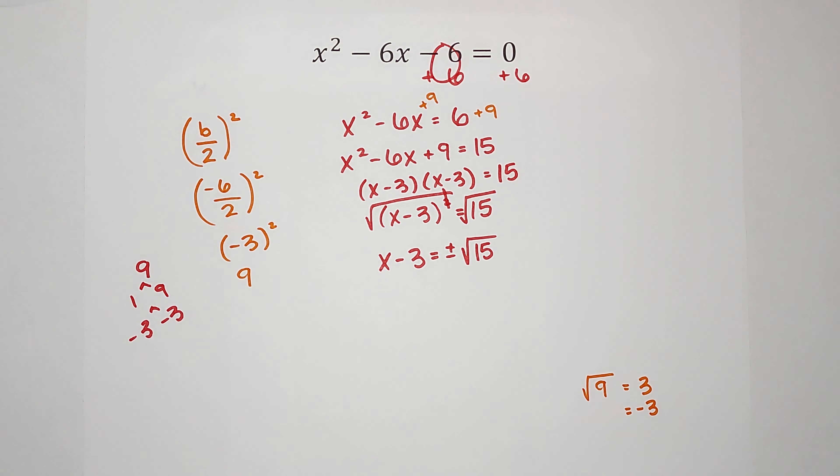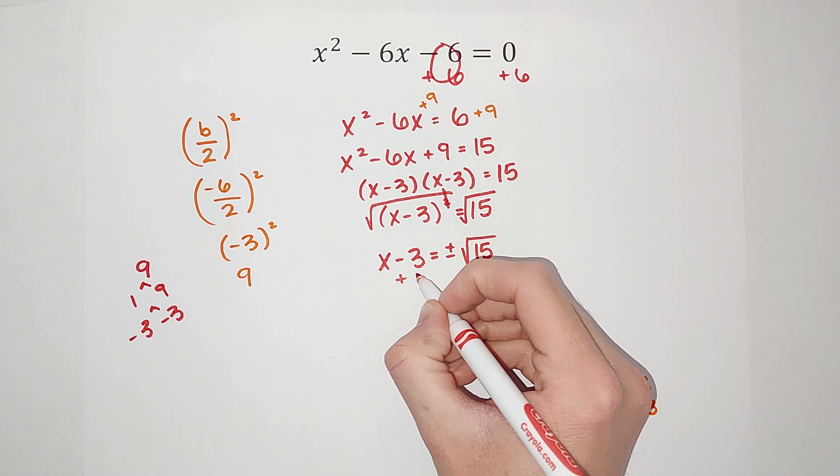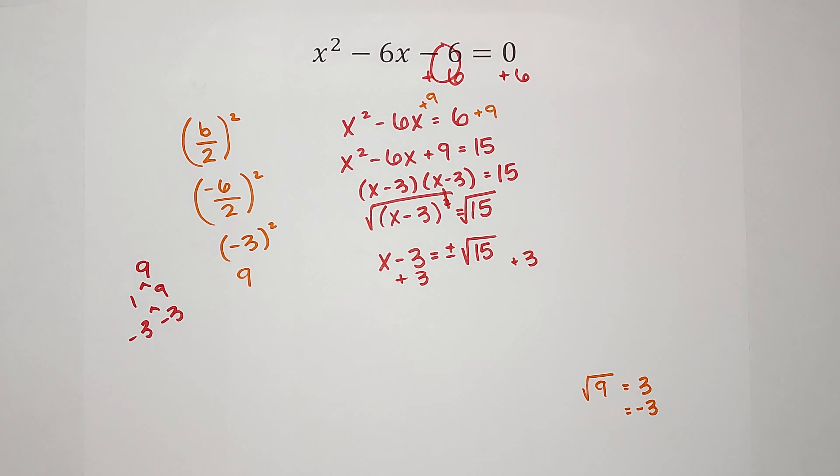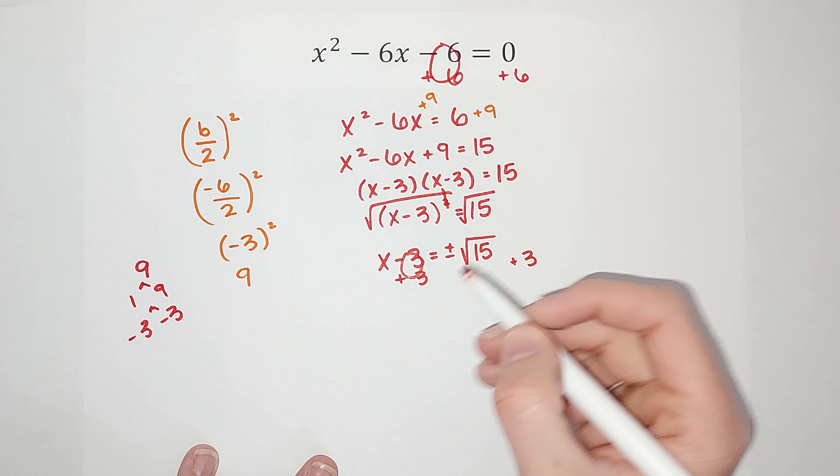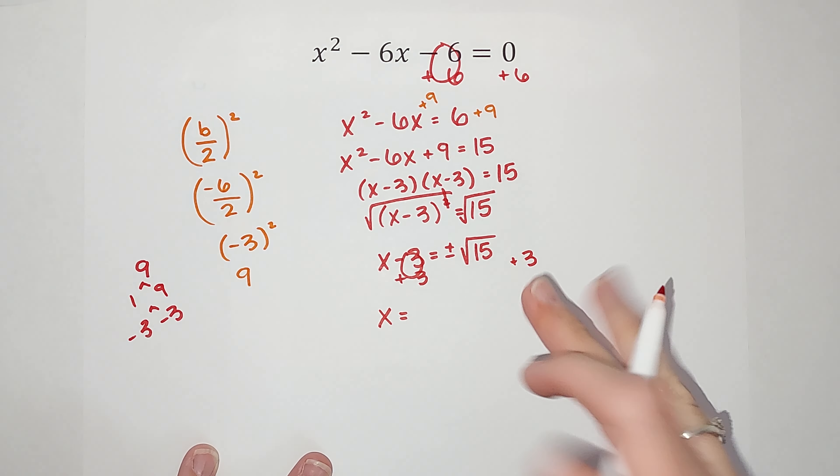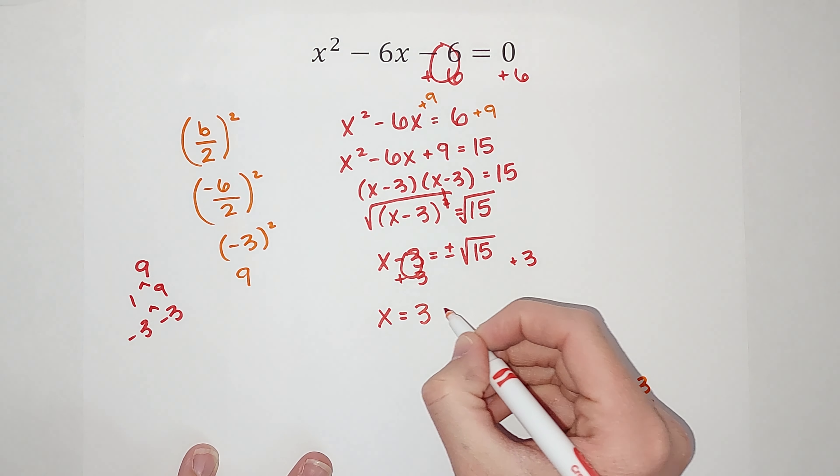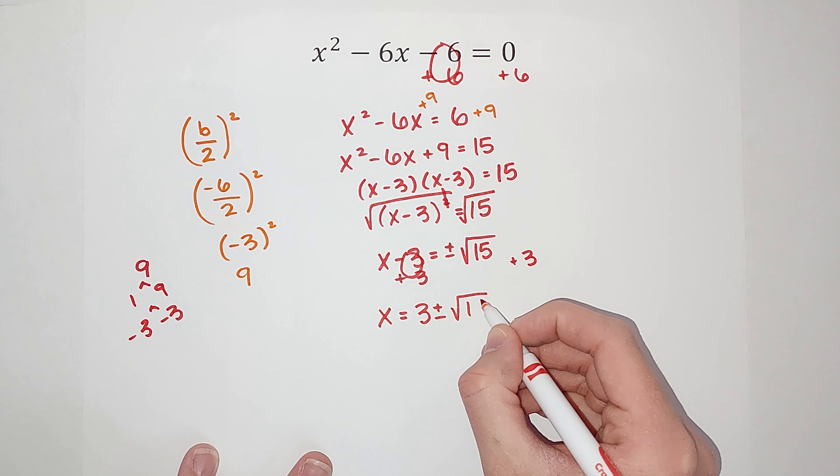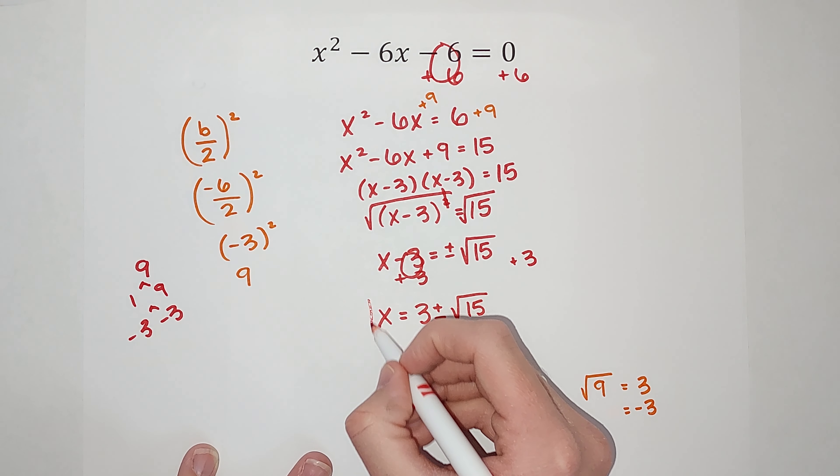But I need to get rid of this negative 3. So I'm going to add 3 to both sides. So you're like, that does not look very fun. But here's how we're going to write it. We're going to write x equals 3 plus or minus the square root of 15. That is my answer.